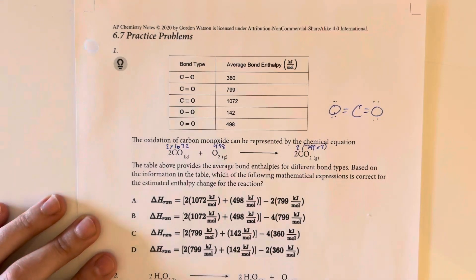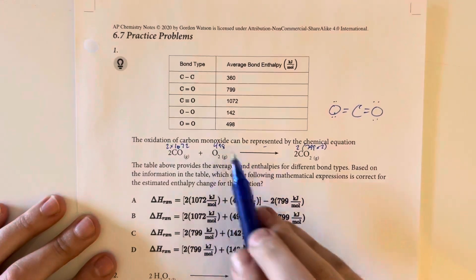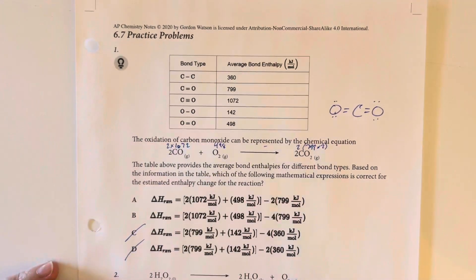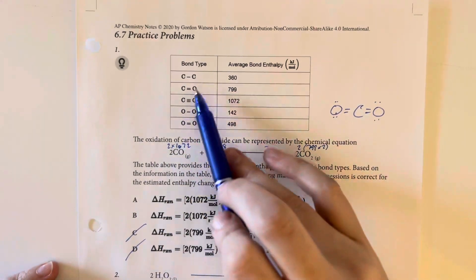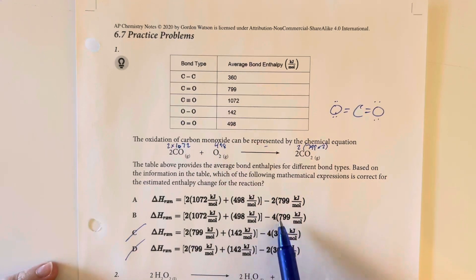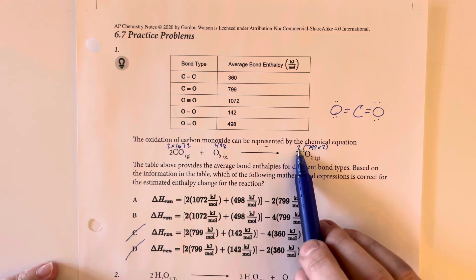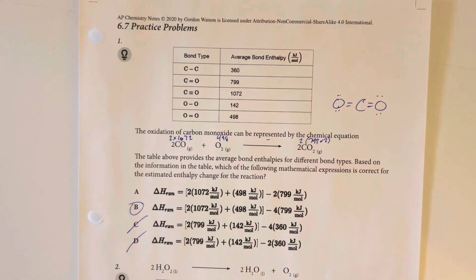I'm going to match what we have here. Remember again, it's reactants minus products. We have two times 1072. So I'm eliminating option choice C and D because carbon monoxide is a triple bond, not a double bond. Then I have the plus 498 that matches. Here we have the difference between two times the 799 or four times 799. I wrote it out as two of these bonds and two of that. That is the same as four times that amount. So option choice B best reflects this reaction.